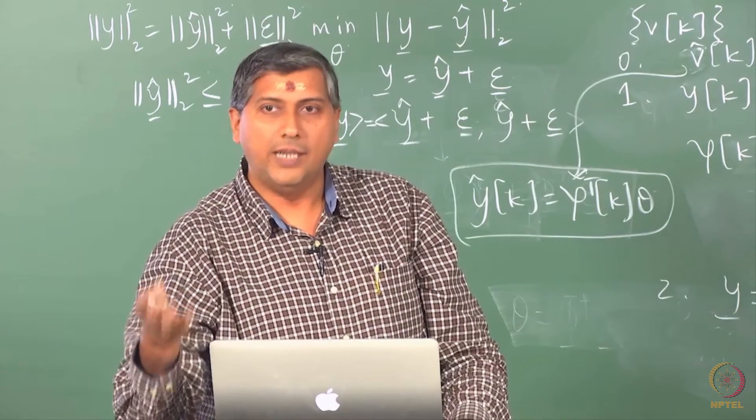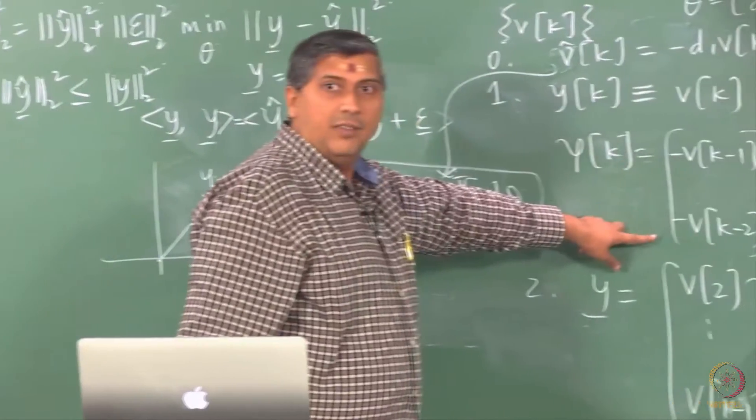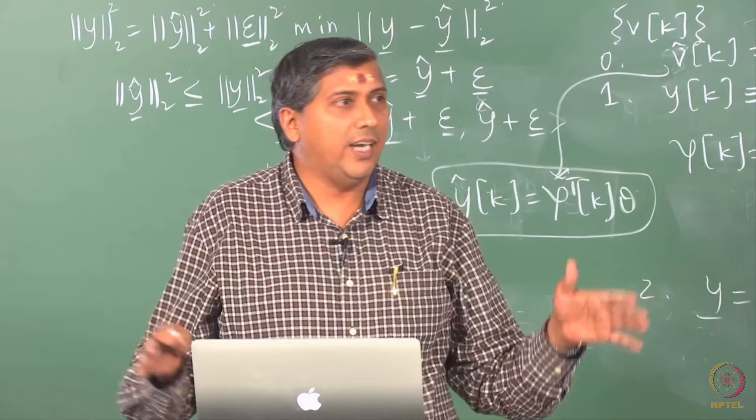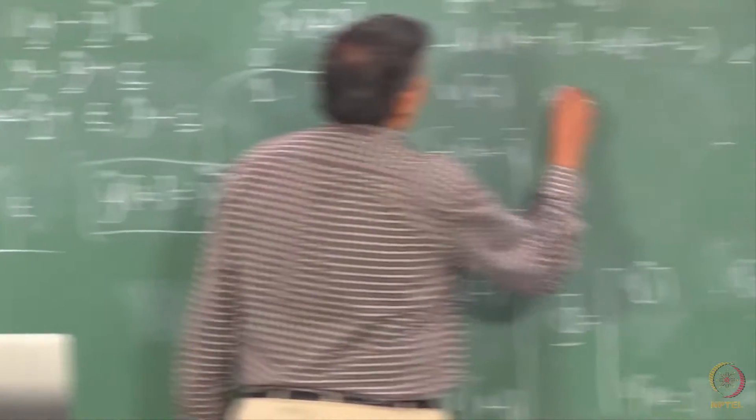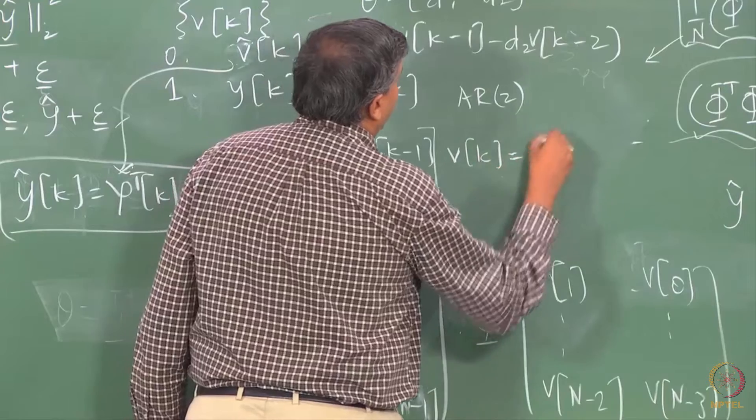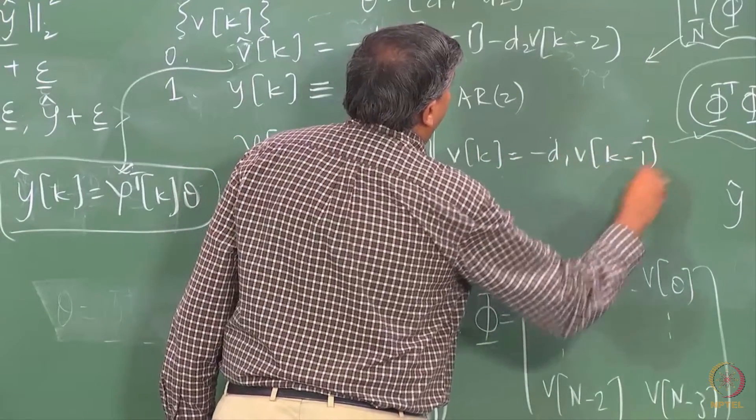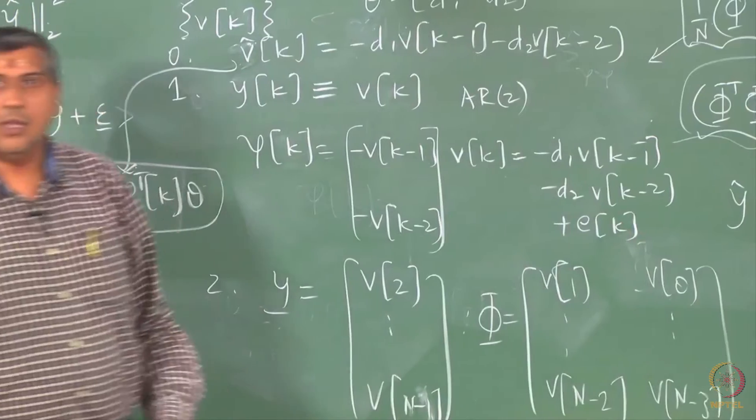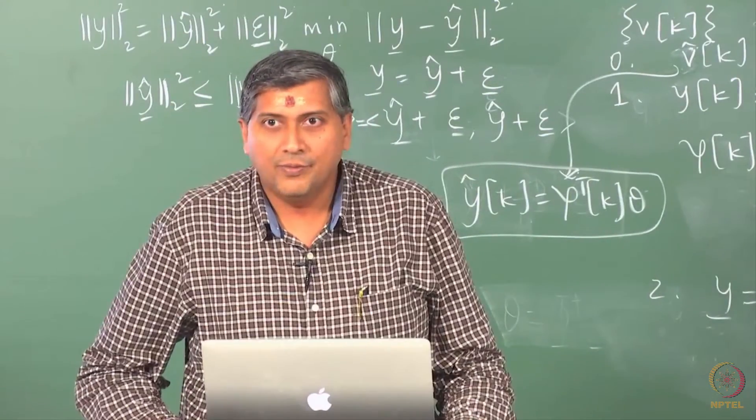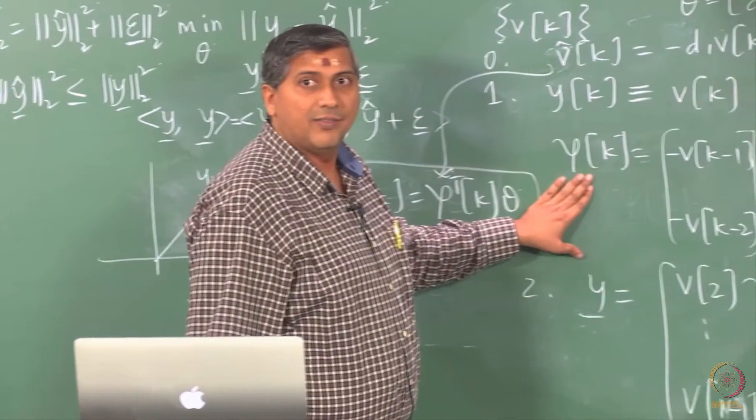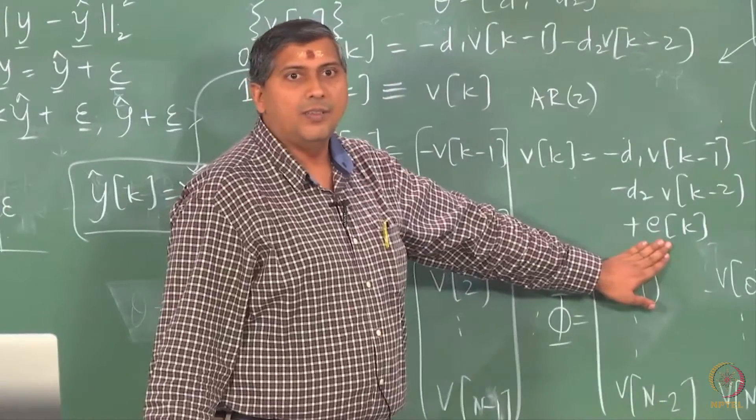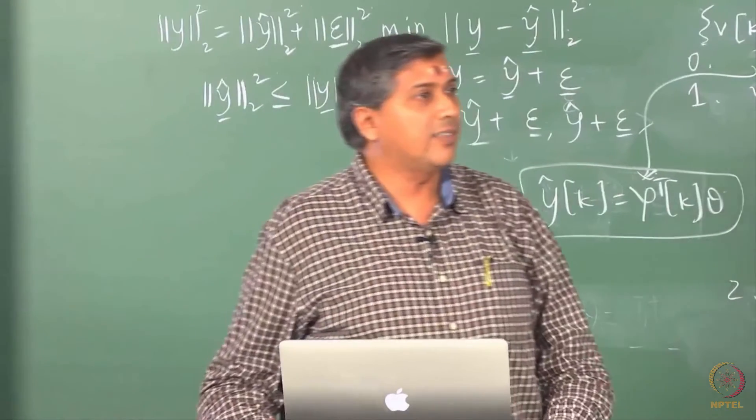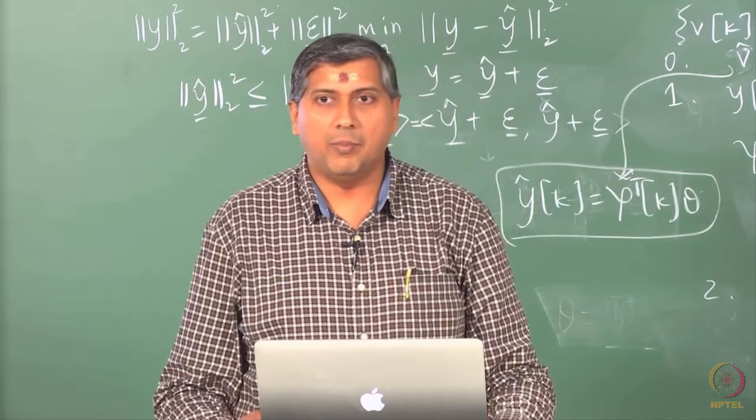Suppose I take AR2 DGP, we have just now said regressors are these, what would be Z? White noise, right? Look at the data generating equation for AR2, what is it? For AR2, the data generating equation is VK equals minus D1 VK minus 1 minus D2 VK minus 2 plus EK. If I have assumed AR2 model, then these are the regressors and this is my Z. If I fit an AR1 to the same process, what will be the regressor? VK minus 1 or minus VK minus 1, what would be ZK? EK, the other term that I have left out.